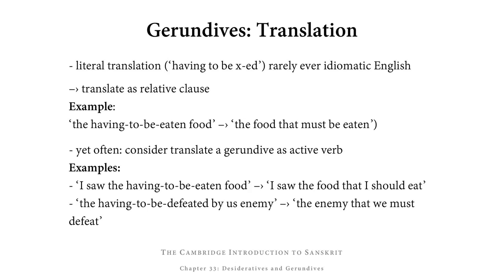When you encounter a gerundive, the literal translation — having to be X-ed, having to be done, having to be seen — rarely ever makes for idiomatic English. Very often what you need to do is translate a gerundive as a relative clause. So, for example, rather than saying the having-to-be-eaten food, you should translate the food that must be eaten. Often you should even consider translating a gerundive as an active verb: I saw the food that should be eaten, or actively, the food that I should eat. The having-to-be-defeated-by-us enemy could be the enemy that must be defeated by us, or more idiomatically, the enemy that we must defeat.